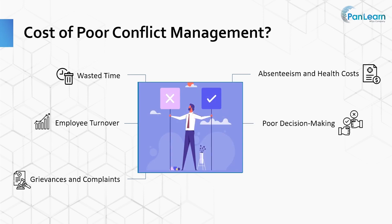Poor Decision Making: destructive conflict disrupts the organization's ability to function effectively. People begin to lose their energy and creativity. They pull back, stop sharing information, and take fewer risks.